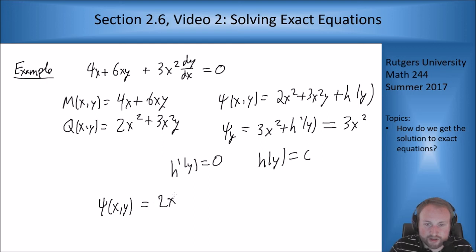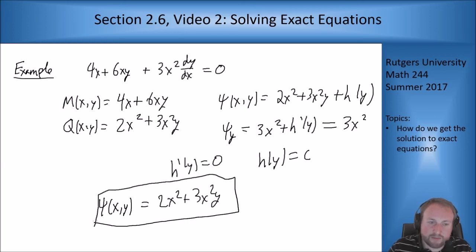And so my ψ(x,y) function, I can assume the constant zero, I'm going to put a constant on either side anyway, is just 2x² + 3x²y. Which, as I said last time, means my integral curves are of the form 2x² + 3x²y equals a constant. And that gives me a way to find my stream function, this ψ function.